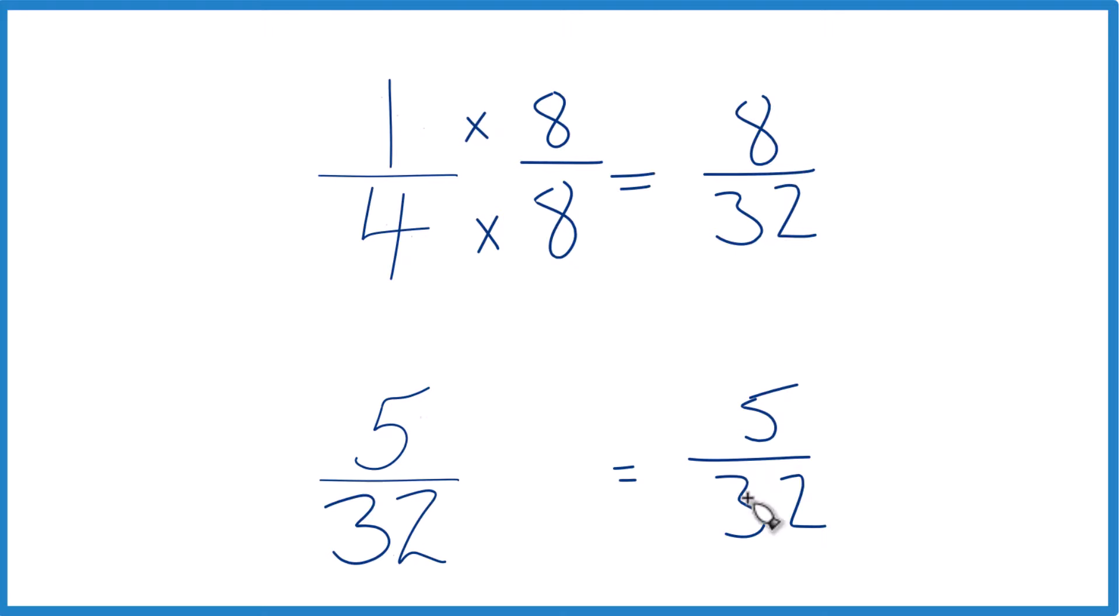And now, same numerator, just compare the denominators. 8 is greater than 5, so 8 32nds, that's greater than 5 32nds, and 1 fourth, since it's the same as 8 32nds, is greater than 5 32nds.